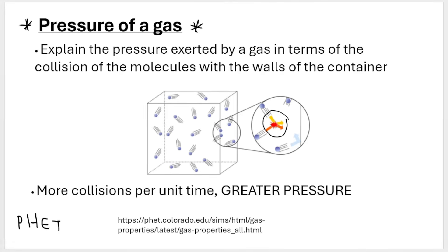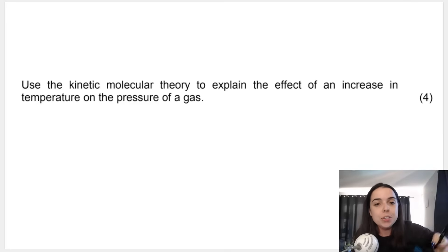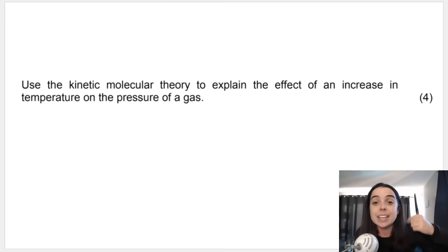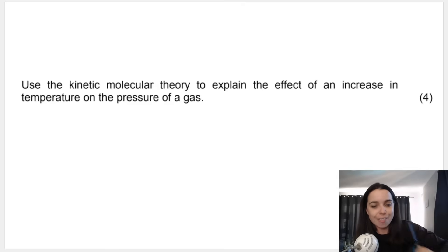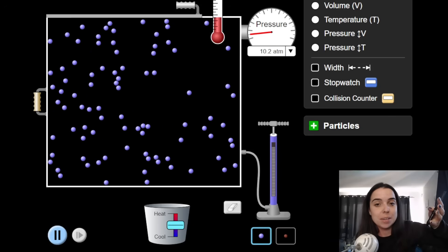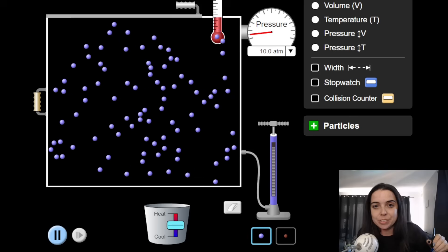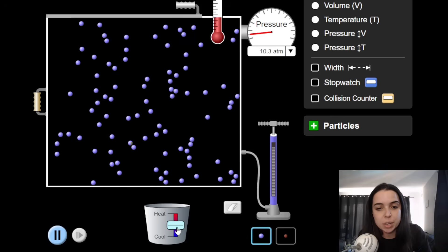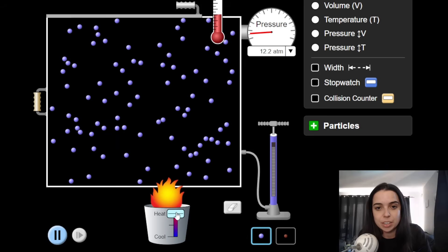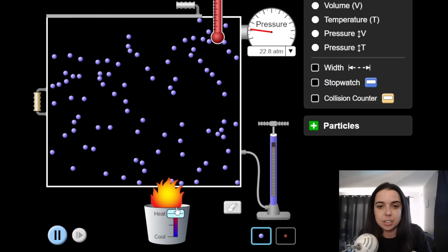Here's an example of how this can be asked in your exams: using the kinetic molecular theory, explain the effect of an increase in temperature on the pressure of a gas. Think about how temperature and pressure are connected. In this simulation, you can see gas molecules inside a container with the pressure and temperature displayed. Watch what happens when I increase the temperature — notice what you can observe.